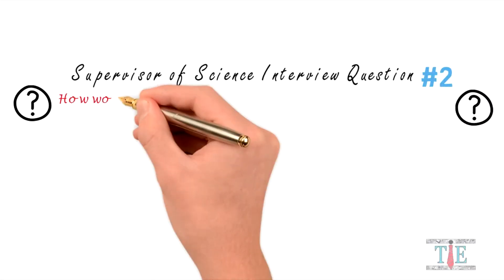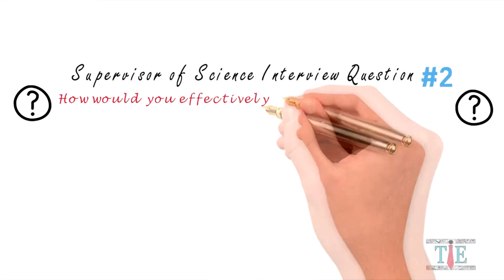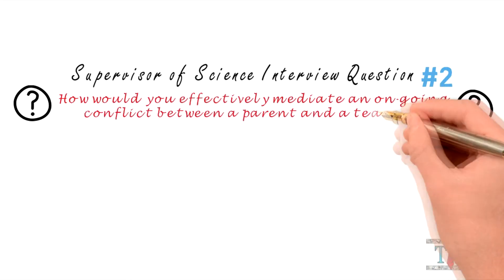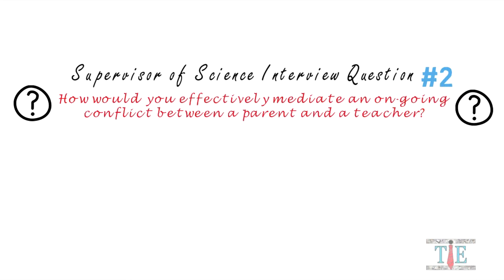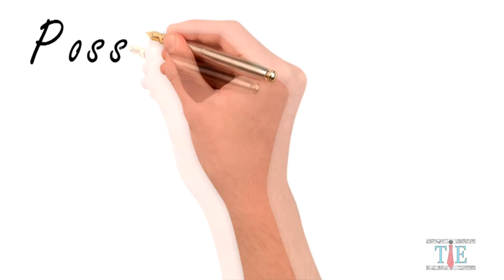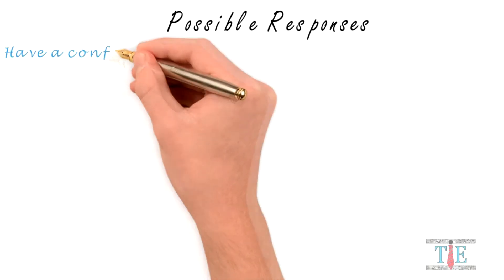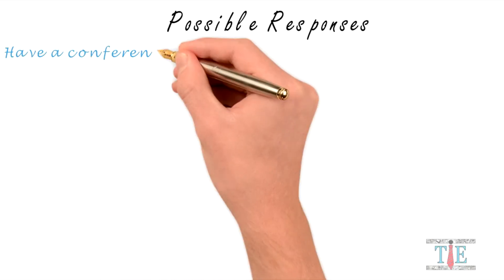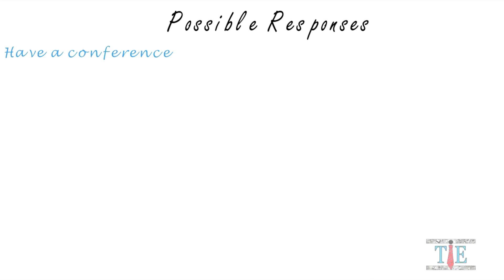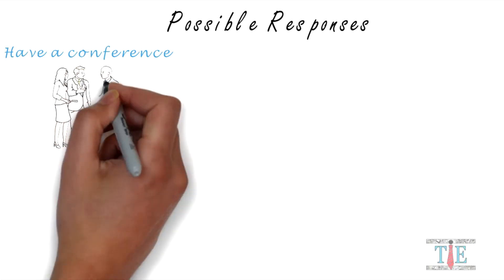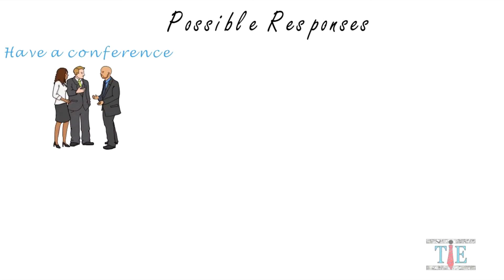Interview question number two: How would you effectively mediate an ongoing conflict between a parent and a teacher? There are many acceptable answers, but here are just a few possible responses. The first thing to do is have a conference — get both the teacher and the parent into the room with you at the same time.